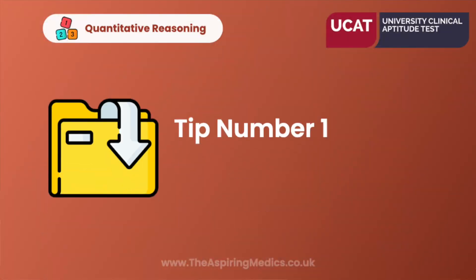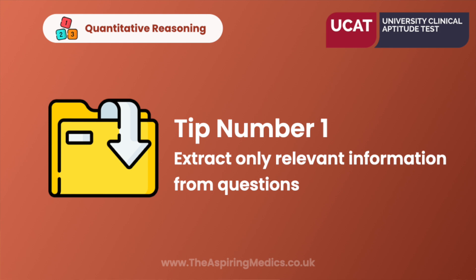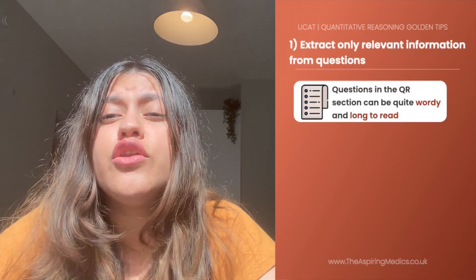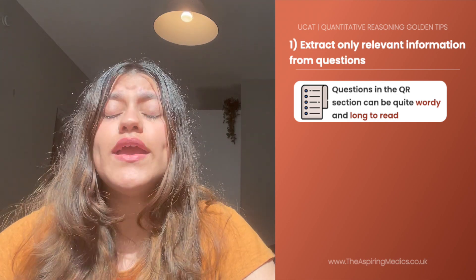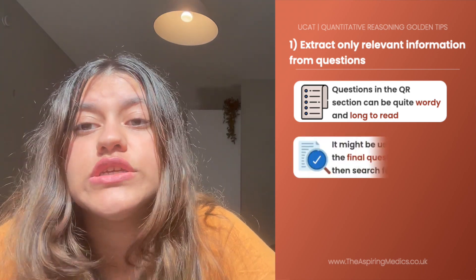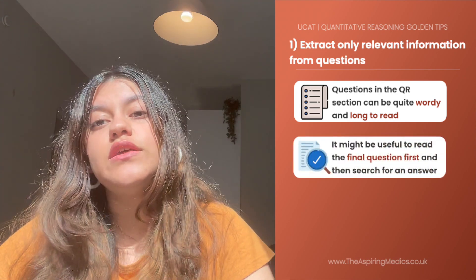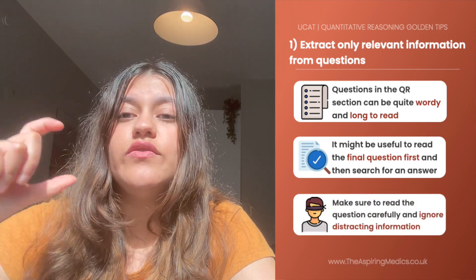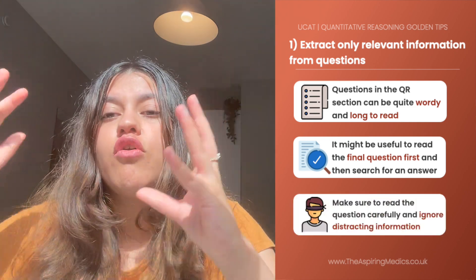Our first tip is to read the question carefully and to extract only the relevant information. If you've practiced some UCAT quantitative reasoning questions before, you would have noticed that some of the questions are notoriously long and have way too much unnecessary information. It might be useful to read the final question first and to then extract the relevant information from the paragraph and the context that they've given.